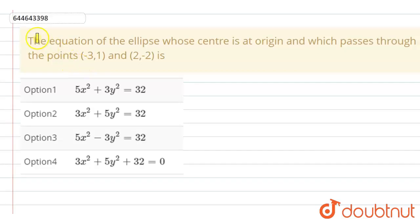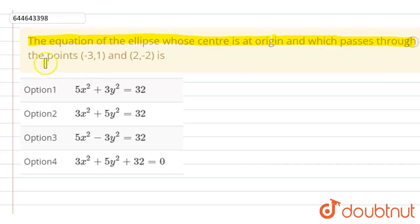Hello student, the question is: find the equation of the ellipse whose center is at the origin and which passes through the points (-3, 1) and (2, -2).